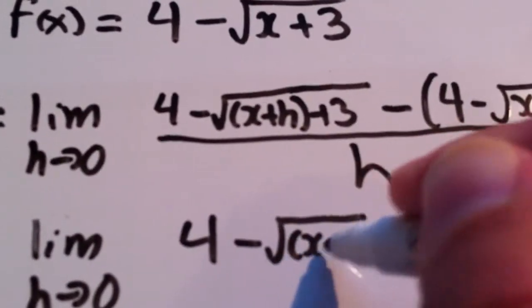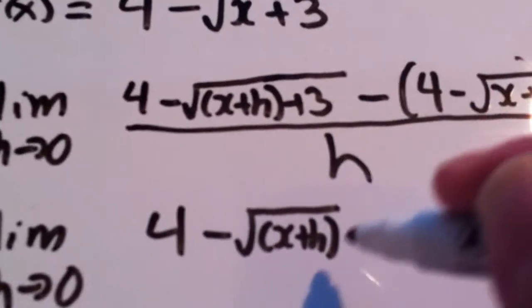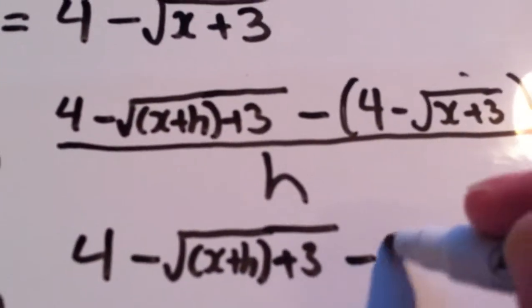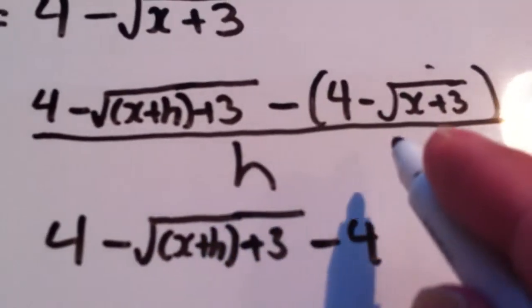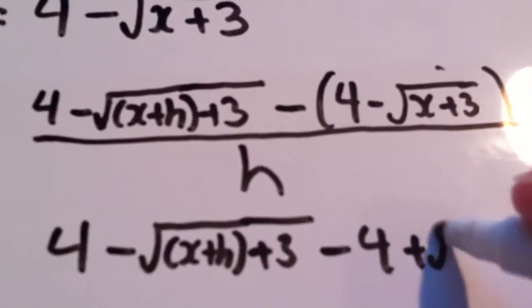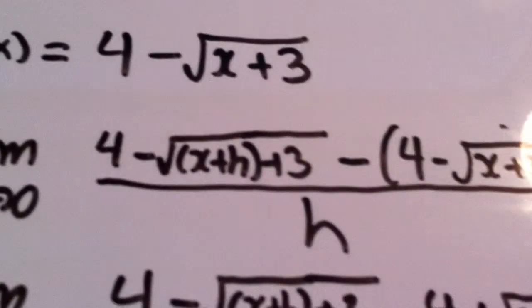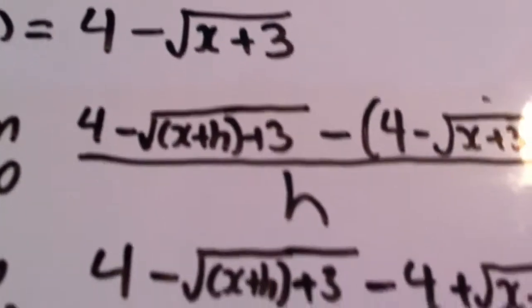...still plus 3, then minus 4, then minus a minus becomes plus √(x+3), all being divided by h.